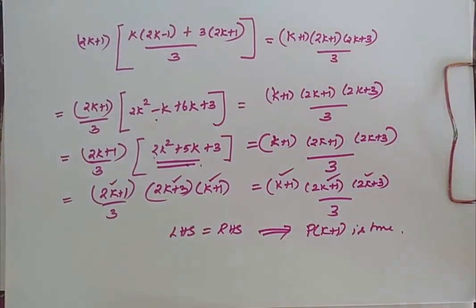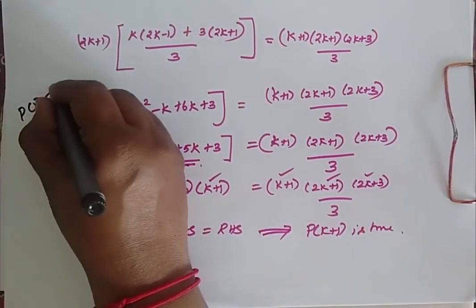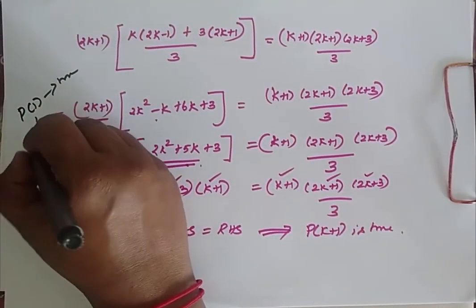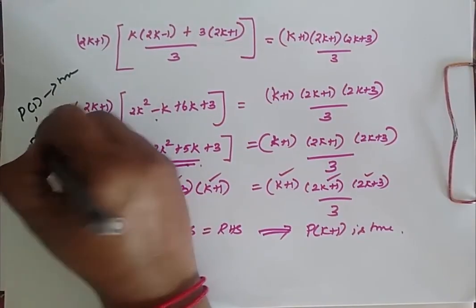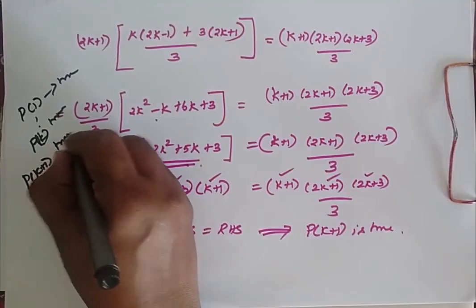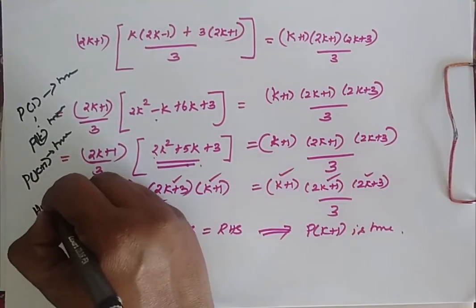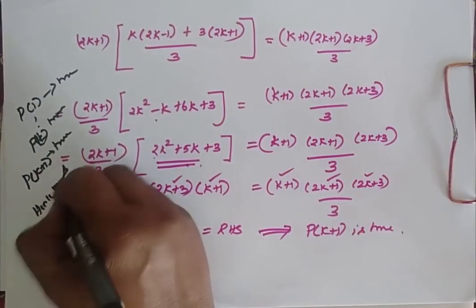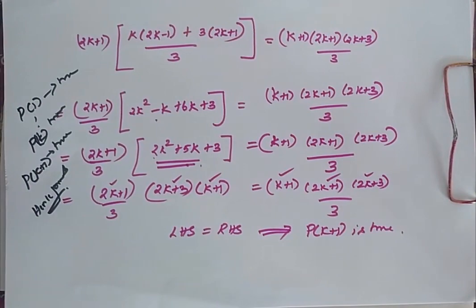Therefore I have proved that P of 1 is true, P of K is true, and P of K plus 1 is true. Hence it is true for all values of N greater than or equal to 1.